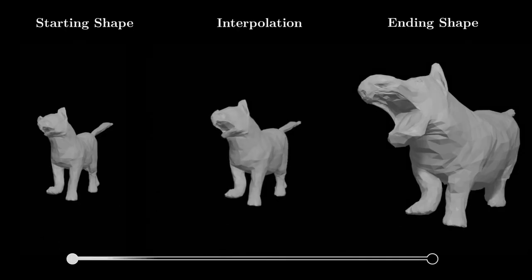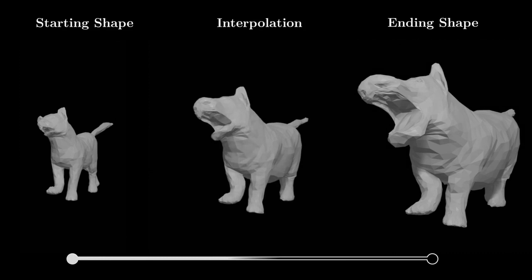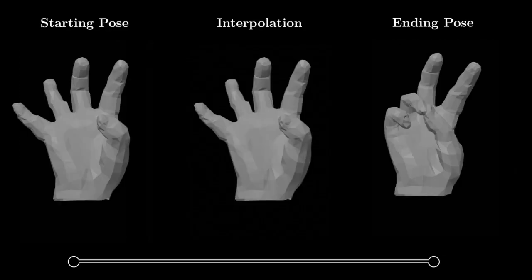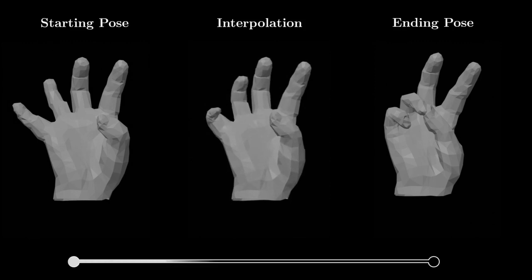We can also interpolate shape code to obtain intermediate frames. We can interpolate pose code as well.